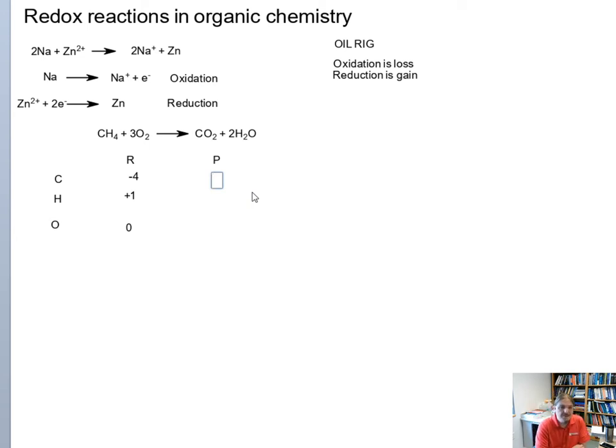So then we would look at the product side and now I have carbon bound to oxygen. Two oxygens, the carbon needs to be plus four to balance that out. Hydrogen is still plus one. And oxygen now in both carbon dioxide and water. It's in the compounds. We would call it minus two. And then we can identify the carbon as having been oxidized and the oxygen atoms as having been reduced.